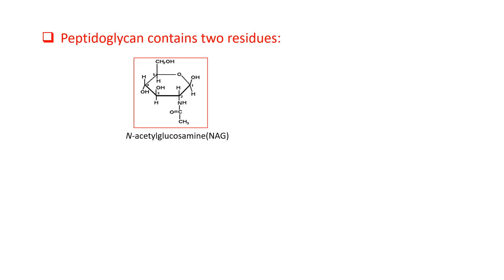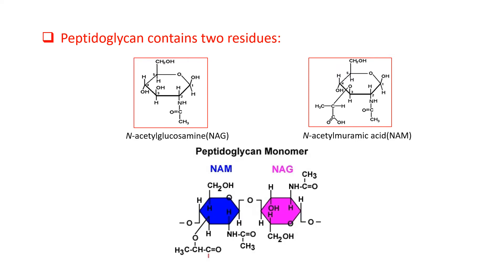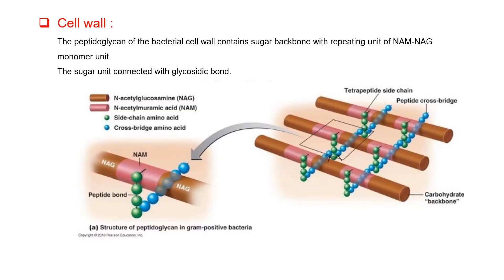Peptidoglycan, or the bacterial cell wall, has two main residues: N-acetyl glucosamine and N-acetyl muramic acid. Together they make a long strand polysaccharide via 1,4 beta glycosidic linkage and create a very sturdy wall of bacteria. The active site of lysozyme targets this area.